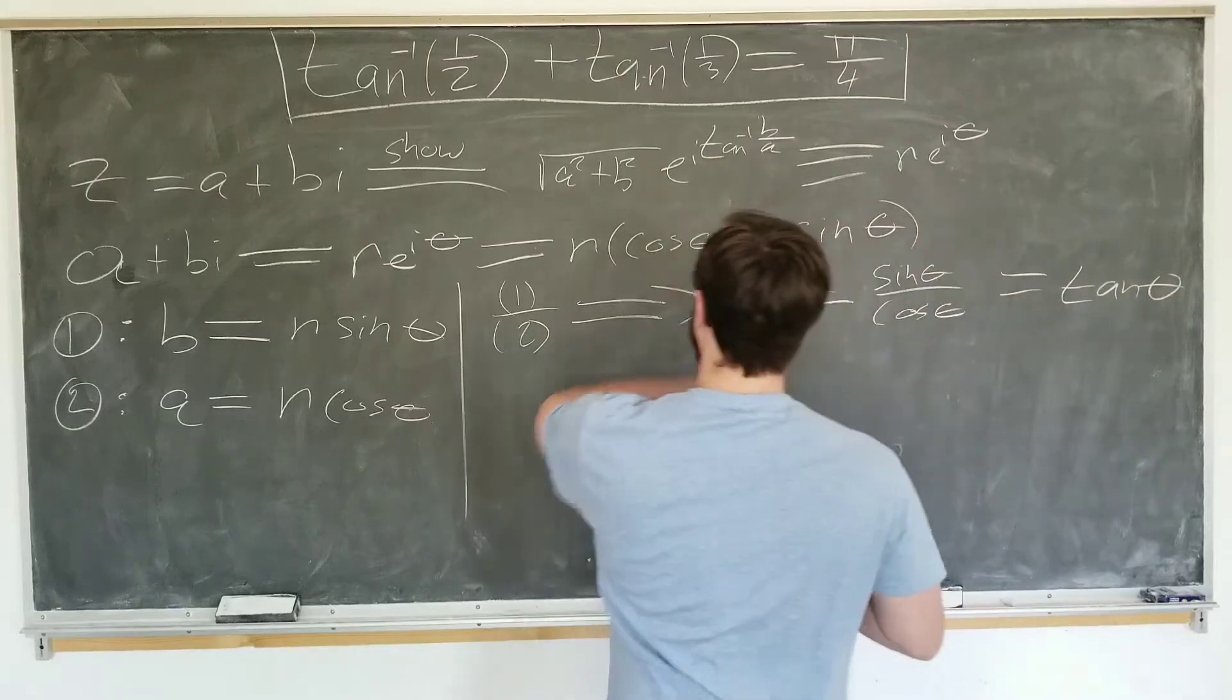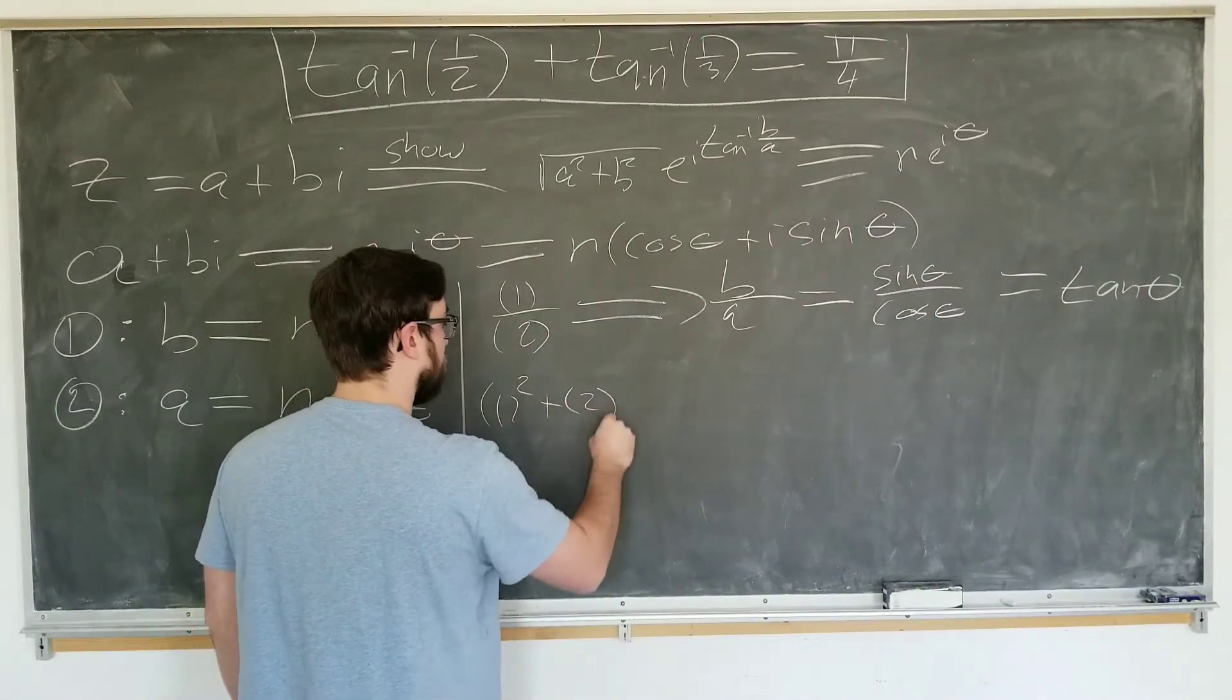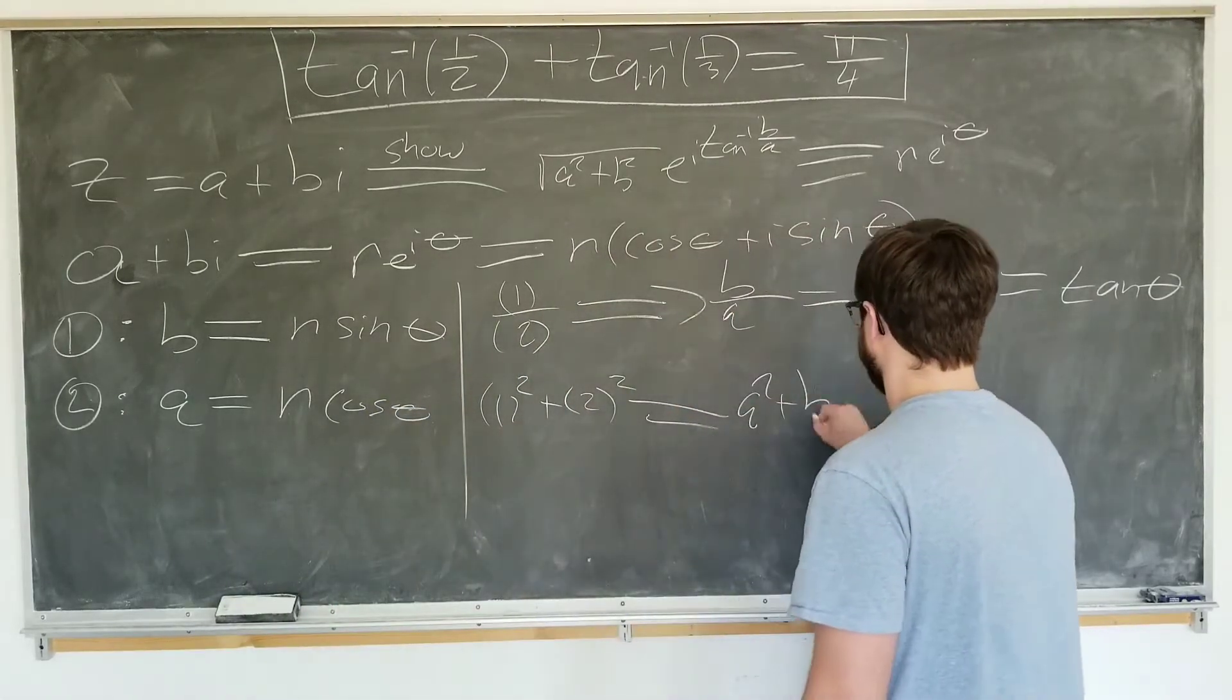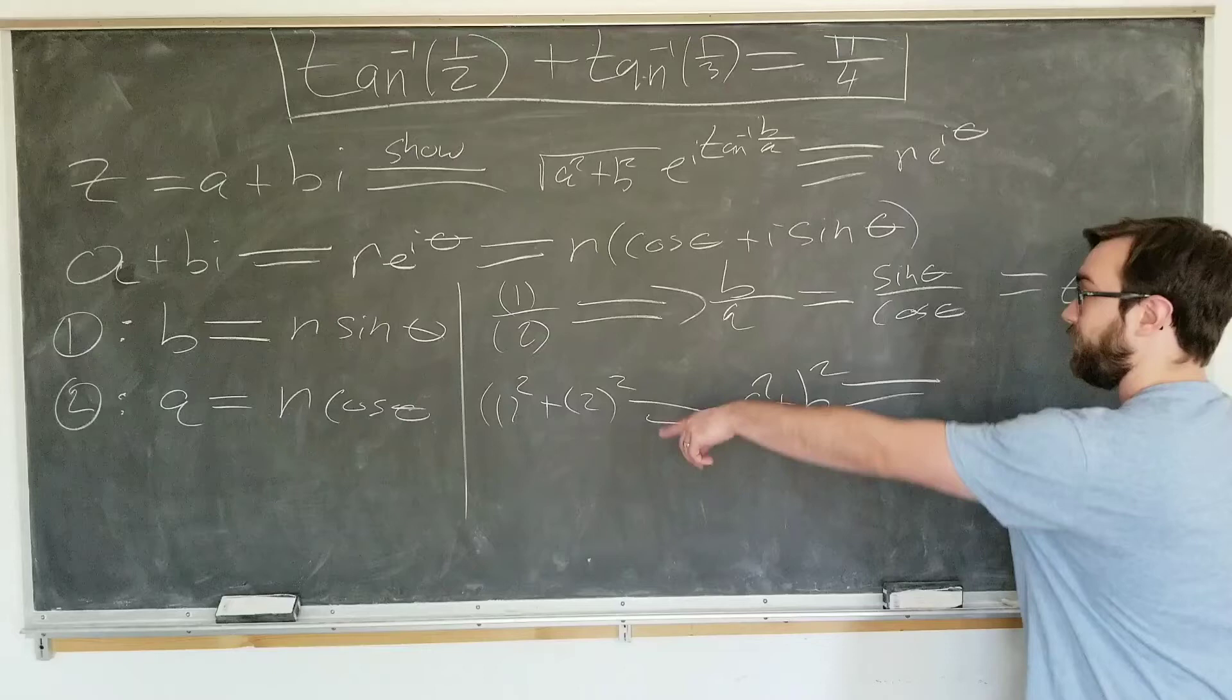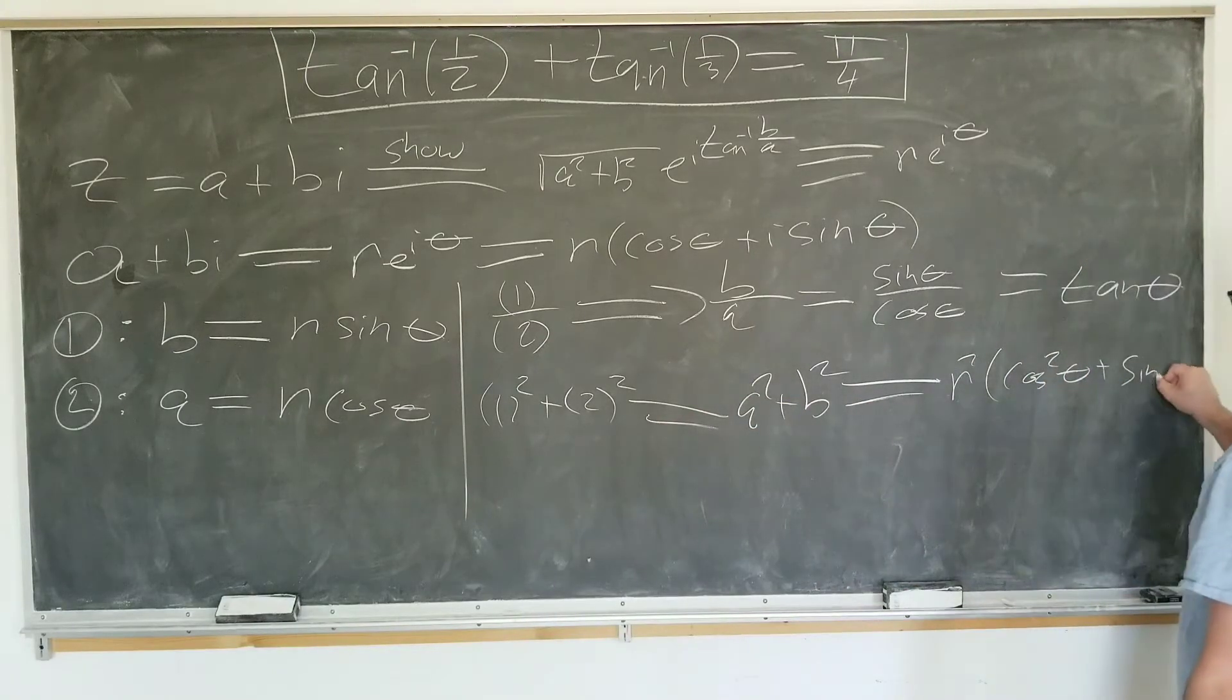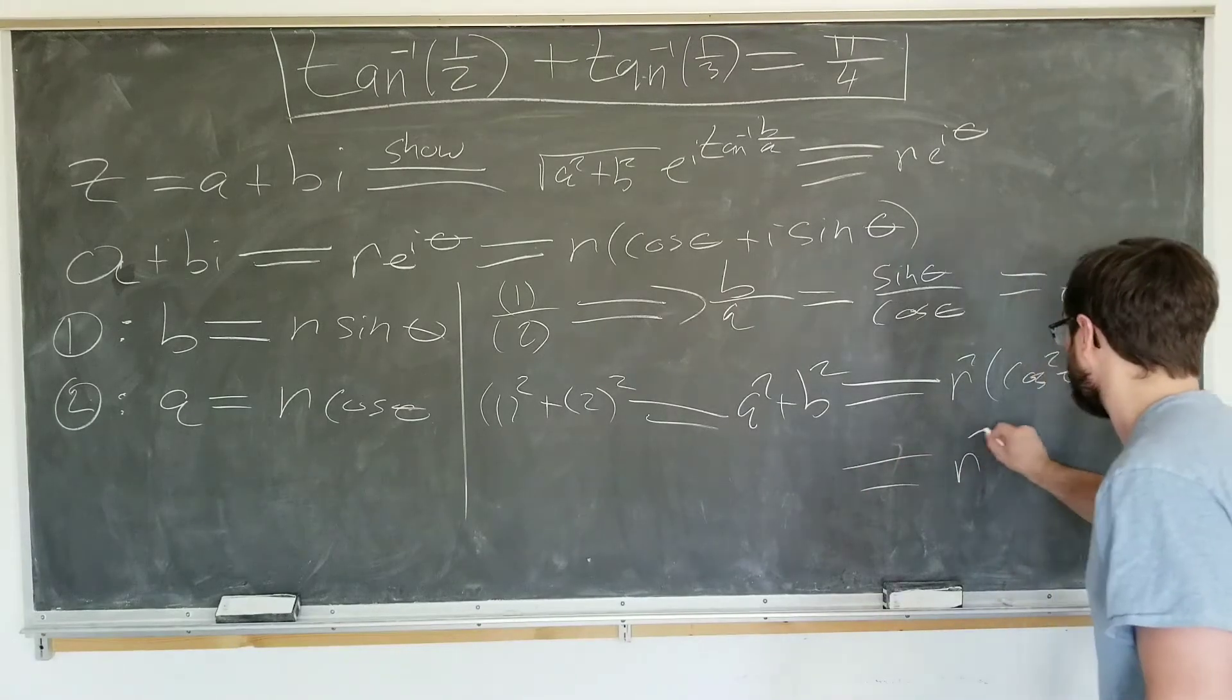Equivalent to what we have written here. And we're going to take one squared plus two squared. This will yield a squared plus b squared, and this is equal to r squared cosine squared theta plus sine squared theta. Recognizing this is one, just r squared.